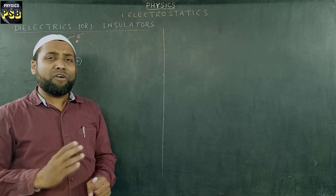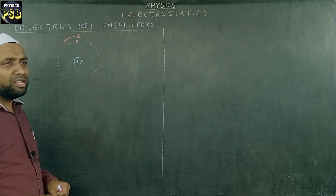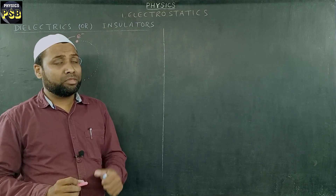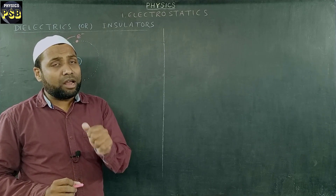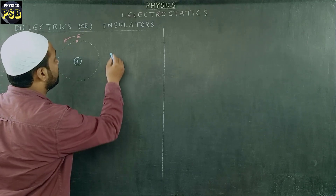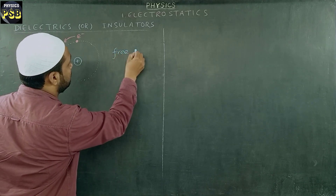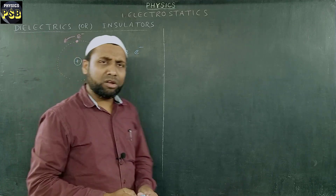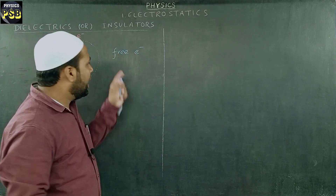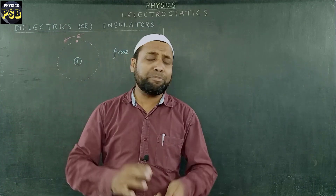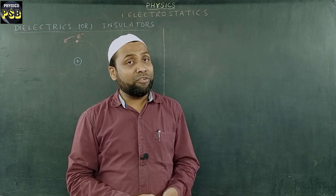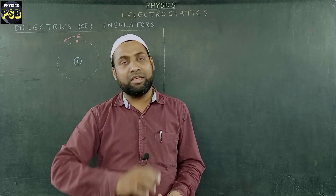This force of attraction reduces as the electrons move away from the nucleus. Electrons which are located far away from the nucleus and are loosely bound are referred to as free electrons, because they are free to move from one atom to another. These electrons play a very important role in the conduction of electric current in a substance.